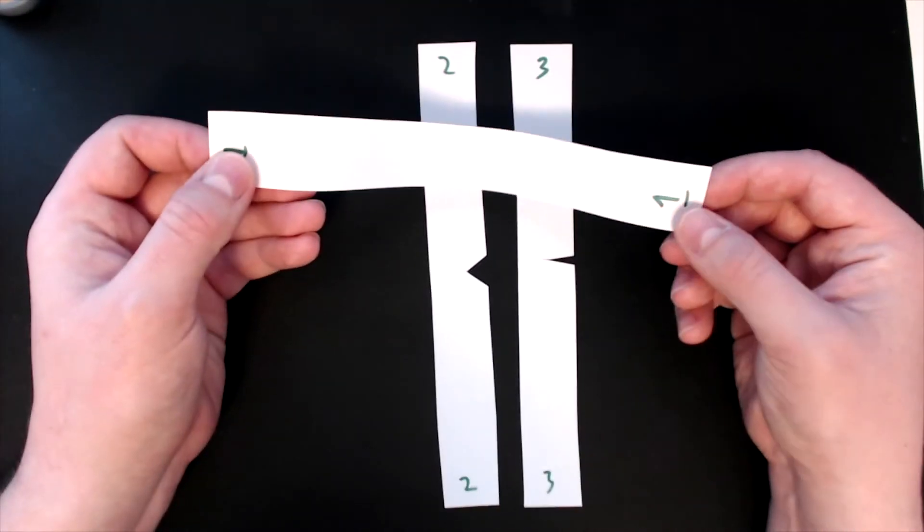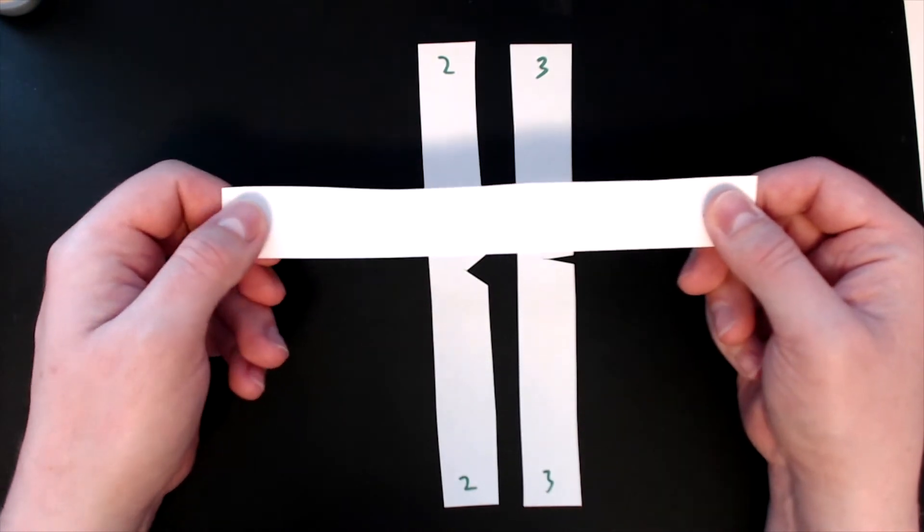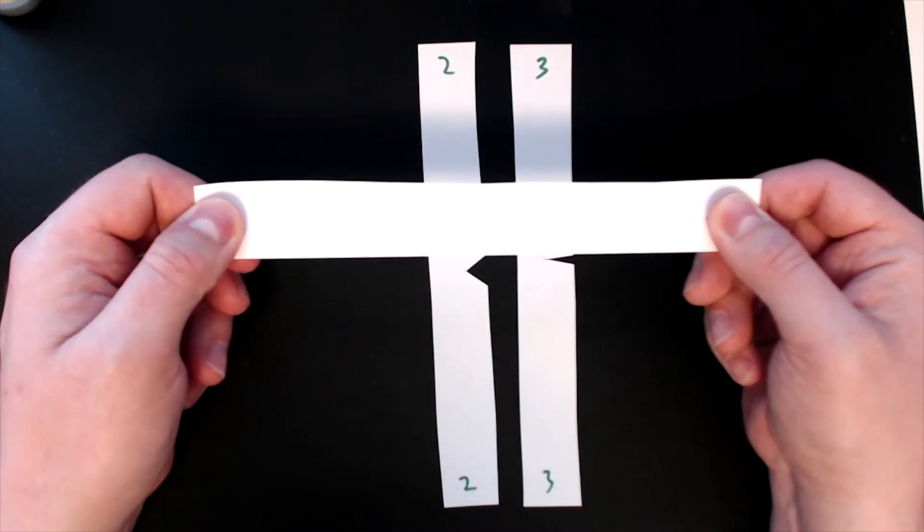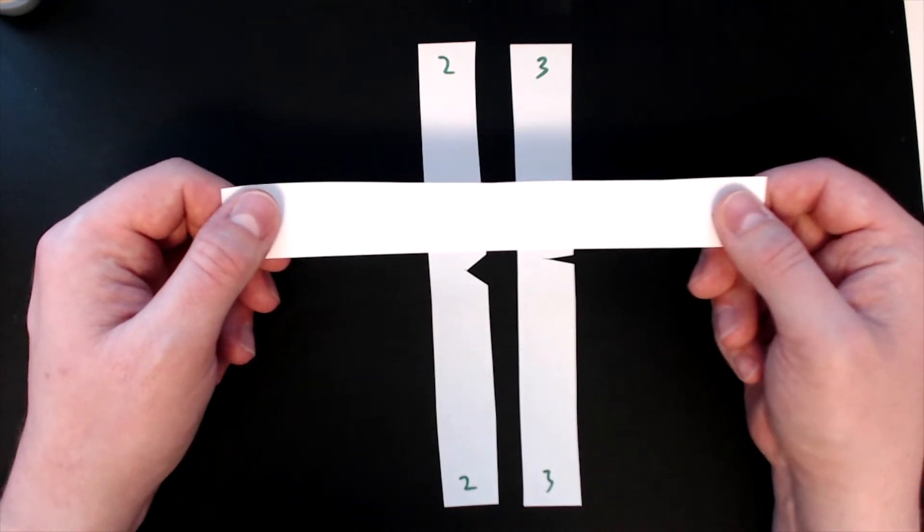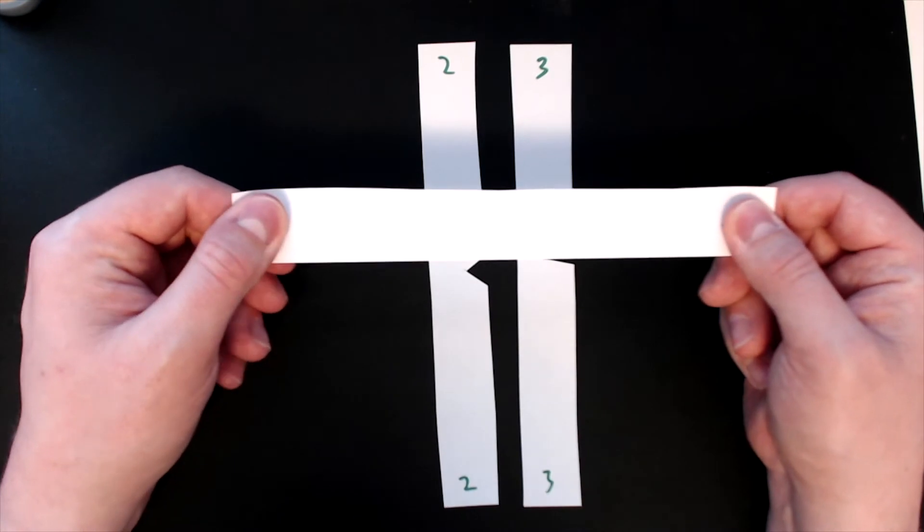I'll start with the first one. It's a tensile sample, so I'm going to do it sideways. I'm going to hold it on the numbers and pull it apart. I'm making a note of how much force it takes.